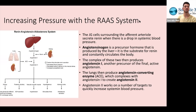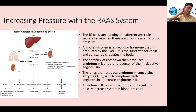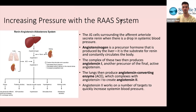Now for the main event: the renin-angiotensin-aldosterone system. The JG cells surrounding the afferent arteriole secrete renin when there is a drop in systemic blood pressure. The substrate for renin is angiotensinogen — renin is the enzyme that attaches to angiotensinogen, a precursor hormone produced constitutively by the liver, essentially just circulating in your body waiting for renin. The RAS system can act quickly because the supply of angiotensinogen is already present. When activated, renin starts the cascade, turning angiotensinogen into angiotensin-1.